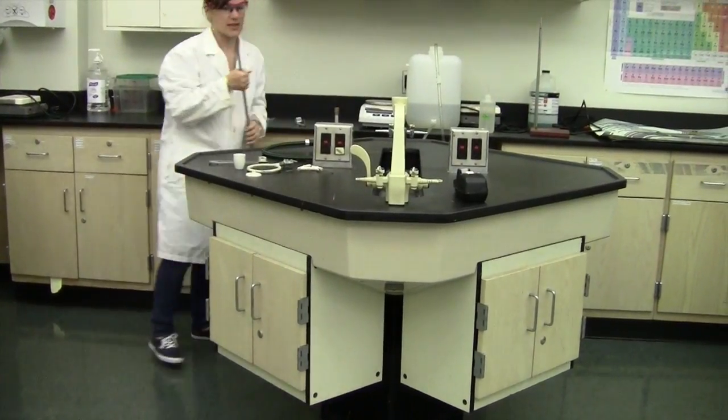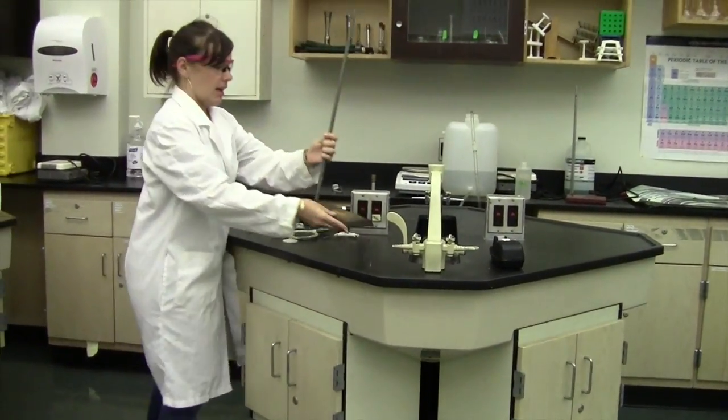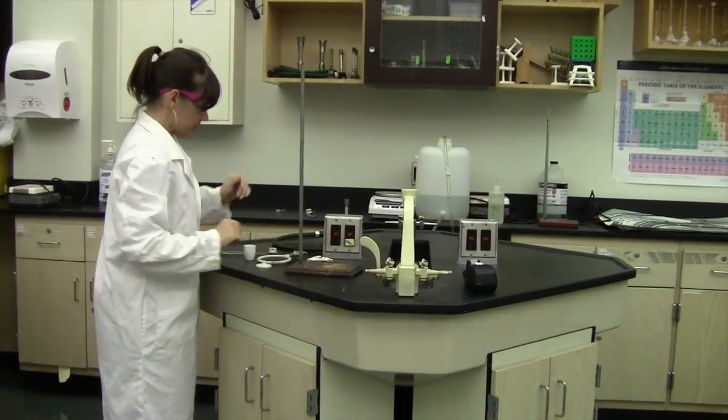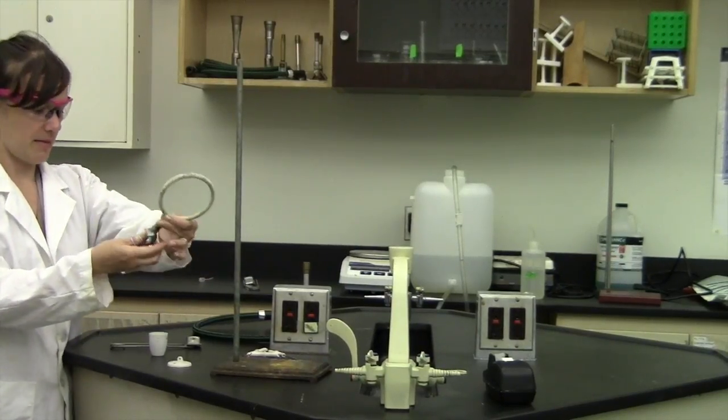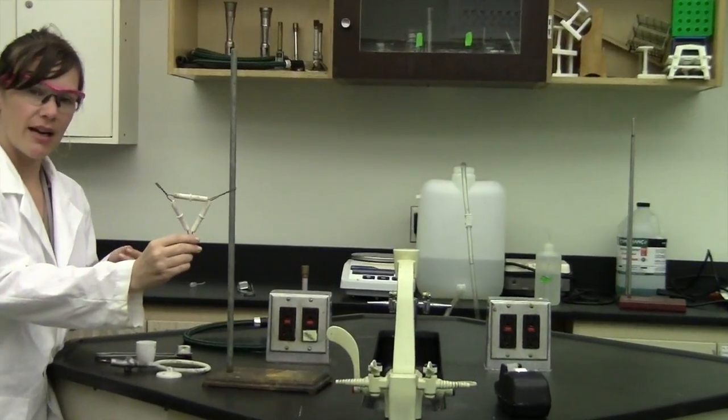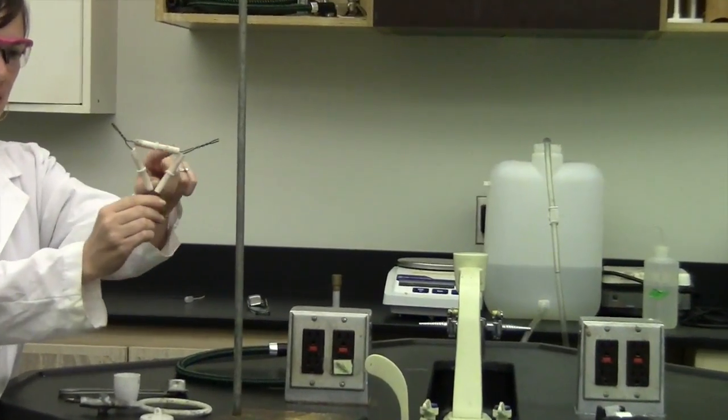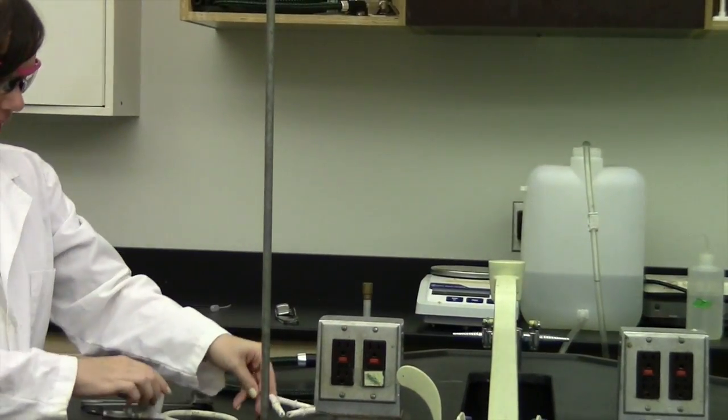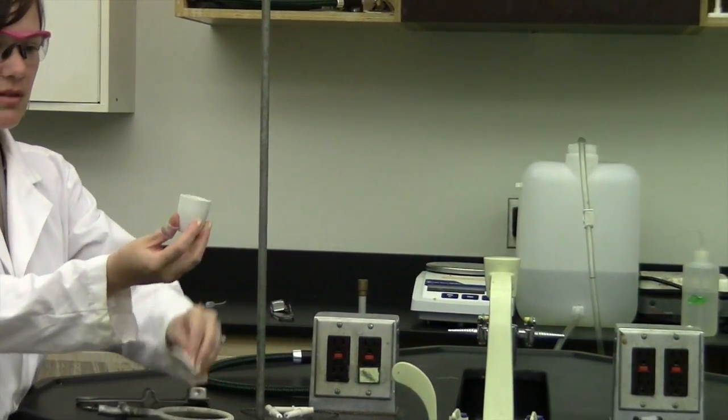We get our ring stand and then other pieces we'll need: a ring that has a clamp in the back of it, a clay triangle, and a crucible with a lid.